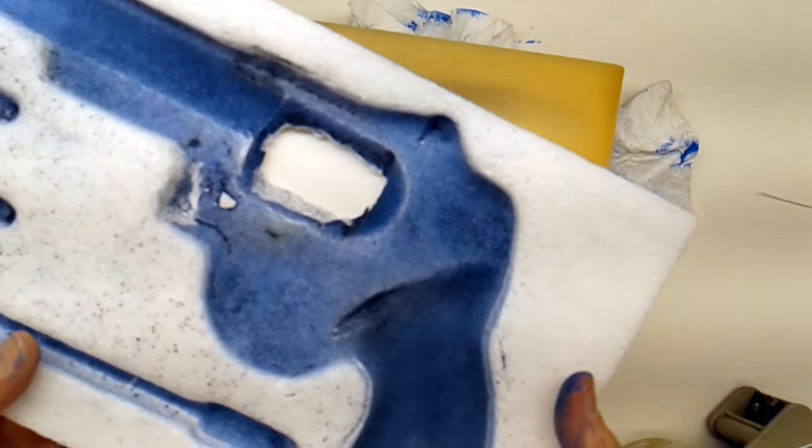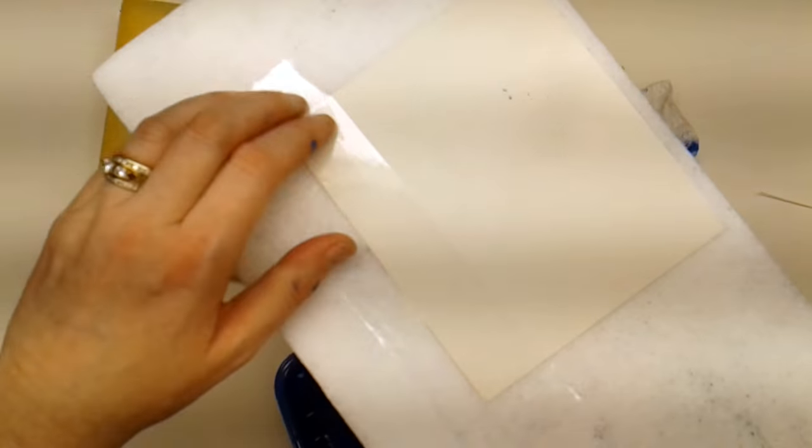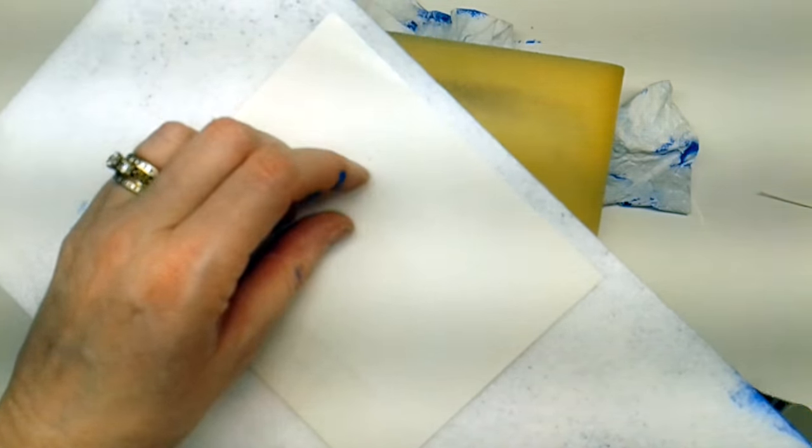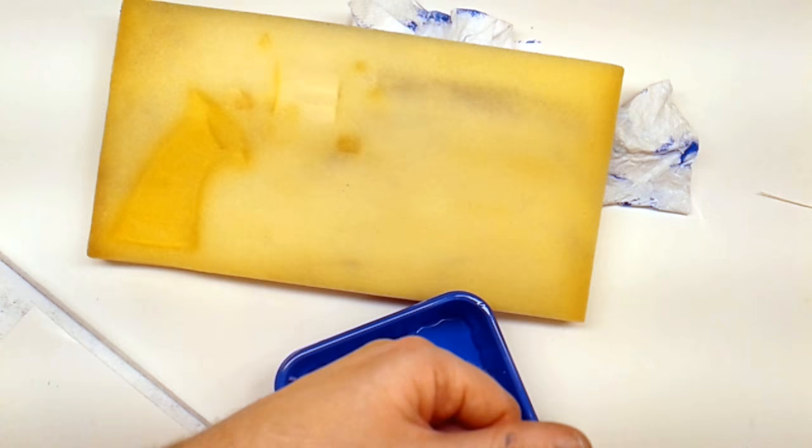Since this piece had a hole in it, what I'm doing is I've got some white cardstock and some packing tape, and I'm going to tape this to the back side.